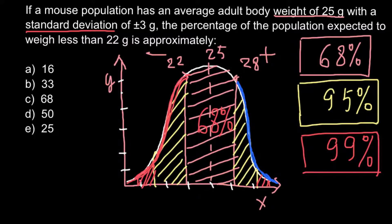The distribution gives us 16 percent on this shoulder and 16 percent on the other. So: 68 percent in the middle for one standard deviation; 100 minus 68 equals 32 percent remaining, divided equally between the two shoulders — 16 percent each. Our answer is answer A.